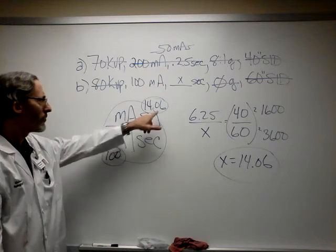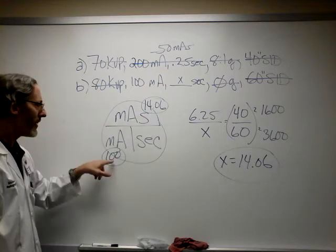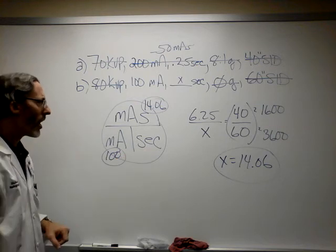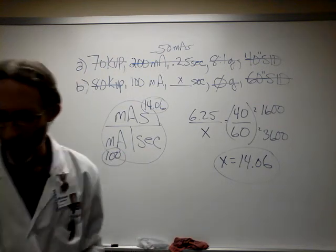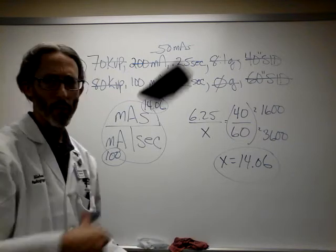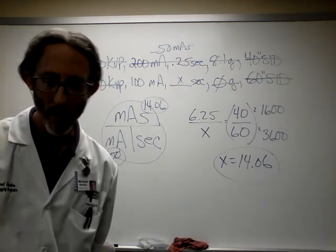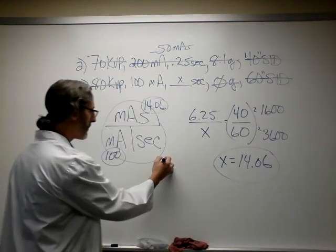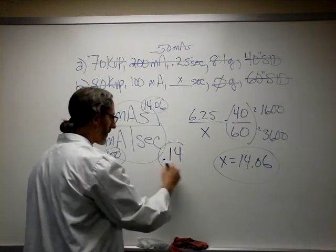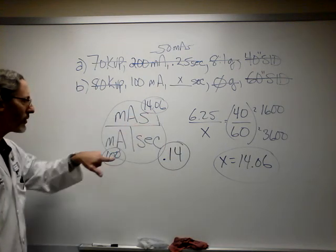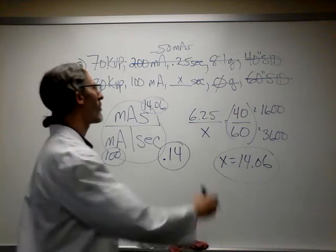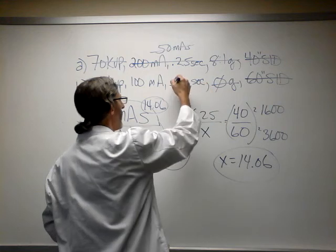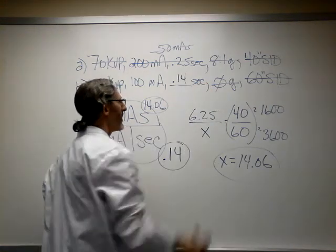So, what do we do? 14.06 divided by 100 will give us the seconds. And what are the seconds? Let's do it right now, because I'm so excited. You know what? We don't need the calculator. We don't need the calculator because I have it written down already in front of me. The seconds are .14. If you were to divide 14.06 divided by 100, you would come up with .14 seconds. Let's get this X out of here. It doesn't belong. Now we have .14 seconds.